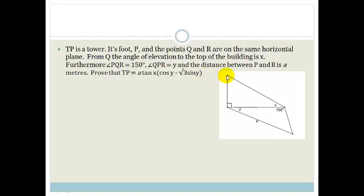So let's look at an example, just to get us to grips with it. It says TP is a tower. At its foot, so that's T, and this is P, is a tower. At its foot, there are points P and Q are on the same horizontal plane. And it says, from Q, the angle of elevation to the top of the building is X. Furthermore, angle PQR equals 150 degrees. Angle QPR equals y. And the distance between P and R is a. And it says, prove that TP is equal to a tan X times by cos y minus root 3 sin y.